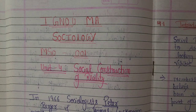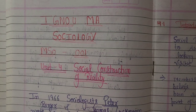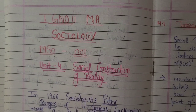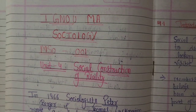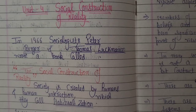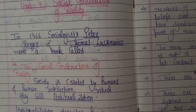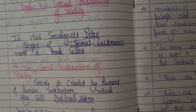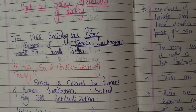In 1966, sociologists Peter Berger and Thomas Luckmann wrote a book called 'The Social Construction of Reality.' First, we will do some background setup — we will talk about construction and what it means.